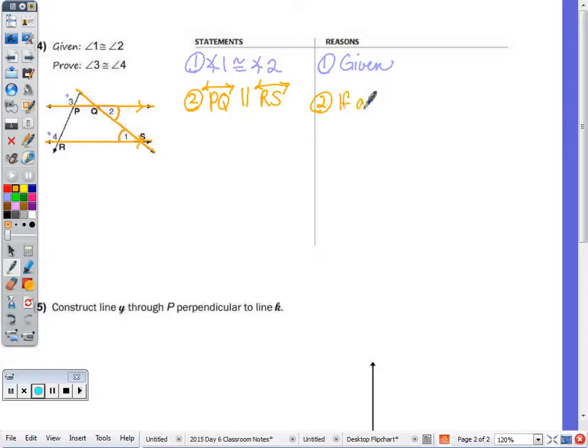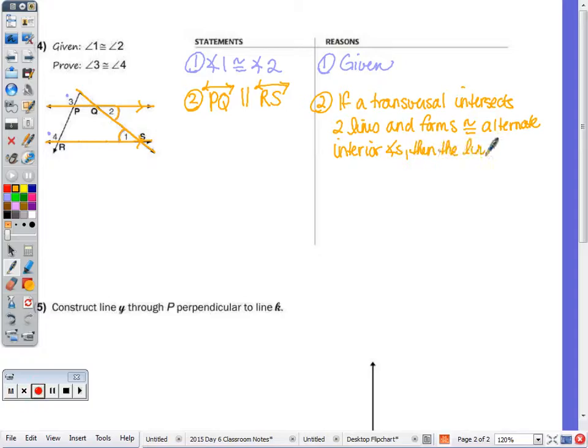So here's my transversal. So number 2 is going to be line PQ is parallel to line RS. Because if a transversal intersects two lines and forms congruent alternate interior angles, then the lines are parallel. Again, when you're using that statement, you want to be sure to mention your transversal, that you have congruent angle pair, and be sure to be specific in naming your angle pair. So now if I know that PQ is parallel to RS, now I know that angle 3 and angle 4 are congruent because they are corresponding angles. So number 3 would be our statement, angle 3 congruent to angle 4.